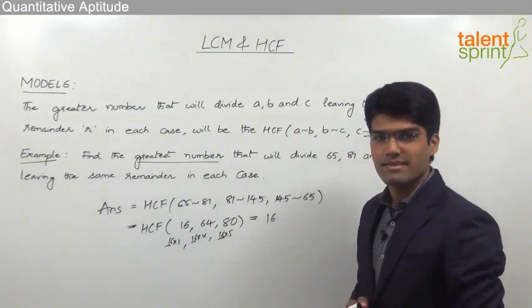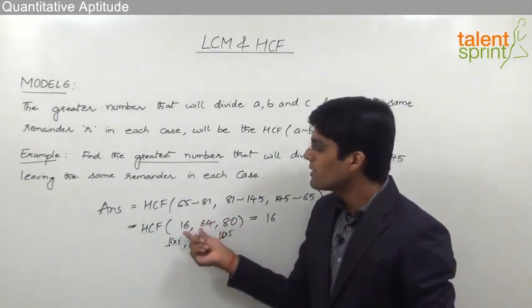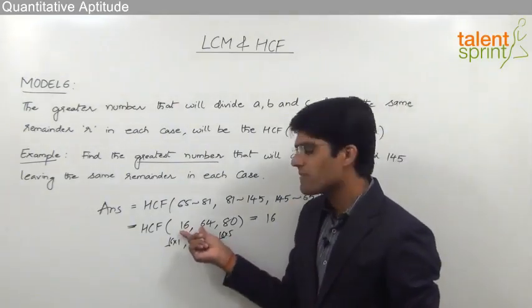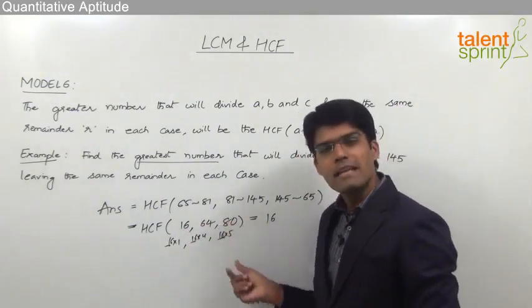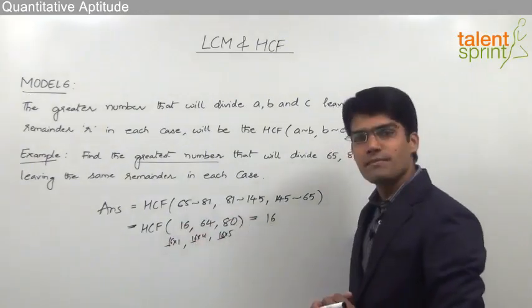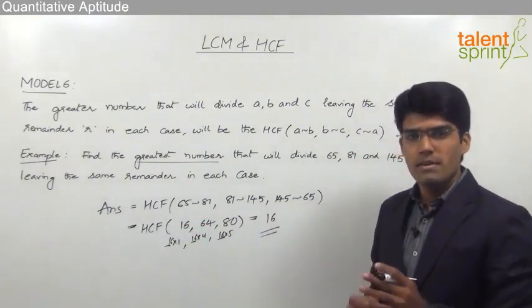Otherwise, if you don't get this idea, then we can go for the procedure that we have discussed for finding out HCF of three numbers. That is, first find out the HCF of 16 and 64, and with the answer and the left out number 80, again find out the new HCF. So that gives the overall HCF for the three numbers. So the answer for this question has to be 16.